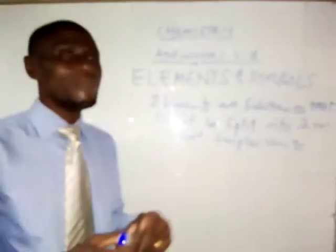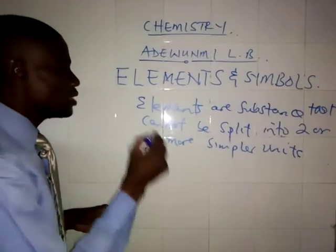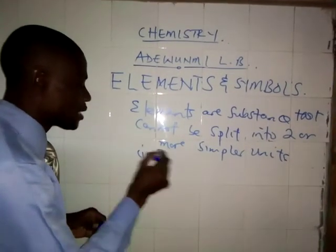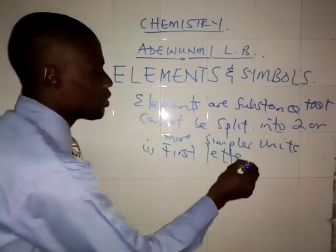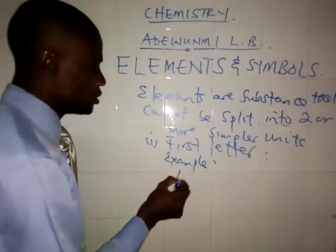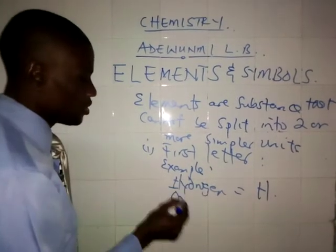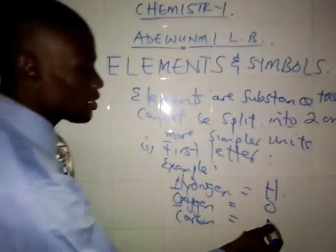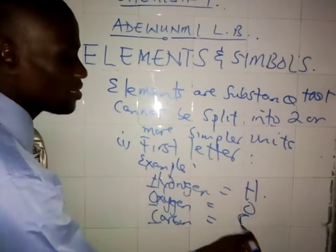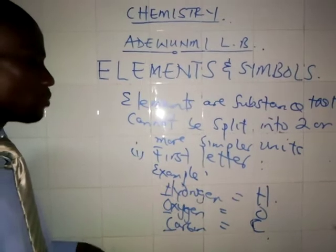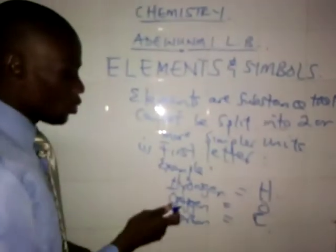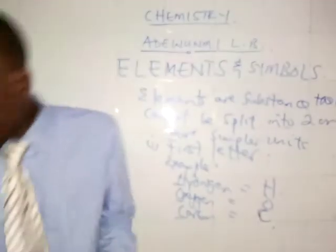So how do we get elements and their symbols? The first category: some elements get their symbol from their first letter. For example, hydrogen starts with H — symbol is capital H. Oxygen starts with O — symbol is O. Carbon starts with C — symbol is C.